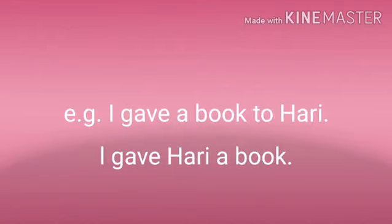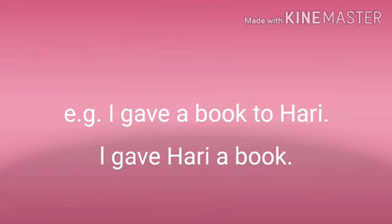We can also write this a second way: 'I gave Harry a book.' In the first sentence, book is the object of the verb 'give' and Harry is the object of the preposition 'to.' In the second sentence, both Harry and book are objects of the same verb 'give.' Book is the direct object and Harry is the indirect object of the verb 'give.'